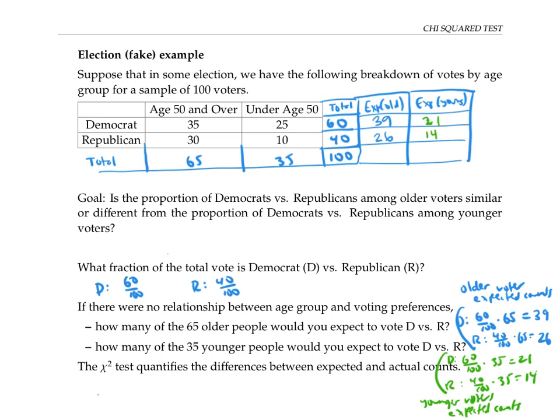They seem fairly close. But to quantify just how different they are, I'm going to look at the difference in each category. So in this category, age 50 and over Democrat, I'm going to take the difference of the observed count minus the expected count, square that difference, and divide it by the expected count. If I do that computation, 35 minus 39 squared over 39, I get 0.41.